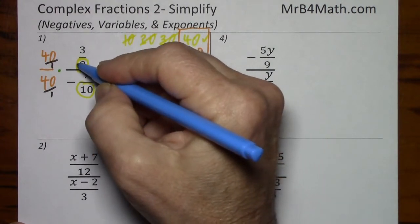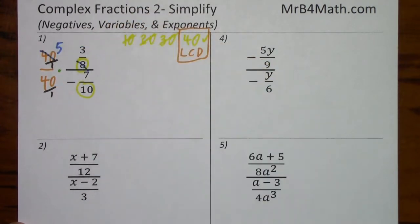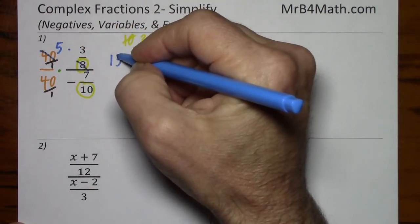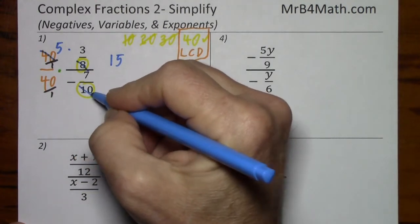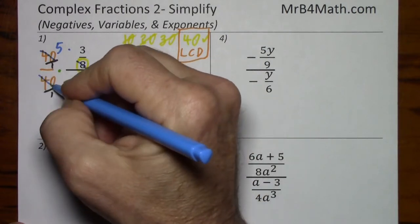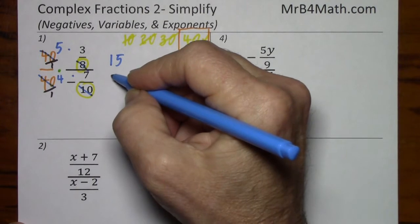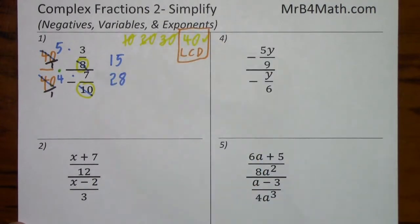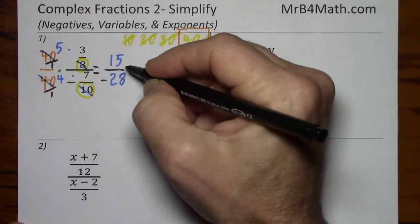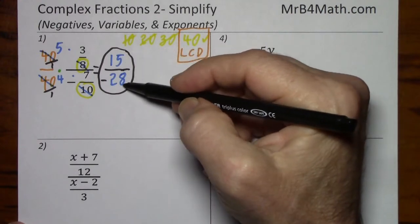Prior to multiplication, we'll simplify. Divide by 8, divide by 8 — leaves us with 5. 5 times 3 is 15. Divide by 10 — that's a 1, but I just don't want to keep writing it, it gets too cluttered. Divide by 10 — that's a 4. So 4 times 7 is 28. I should have indicated negative 7, so 4 times negative 7 is negative 28. Since there's no common factors, our final answer is 15 over negative 28.